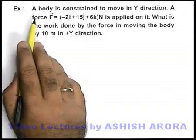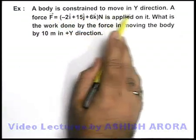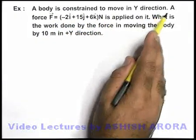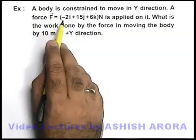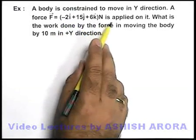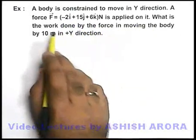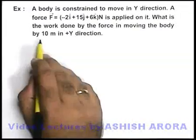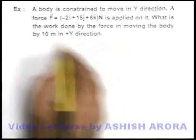In this example, the question says a body is constrained to move in Y direction. A force F vector that is -2i cap + 15j cap + 6k cap Newton is applied on it. What is the work done by the force in moving the body by 10 meter in +Y direction?